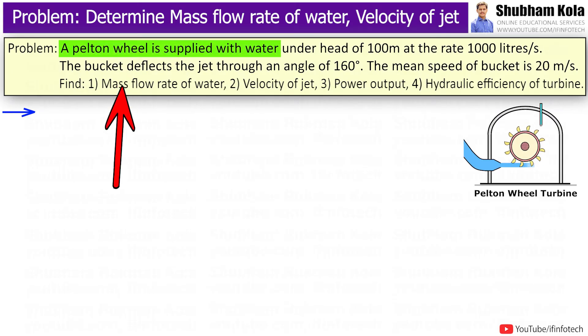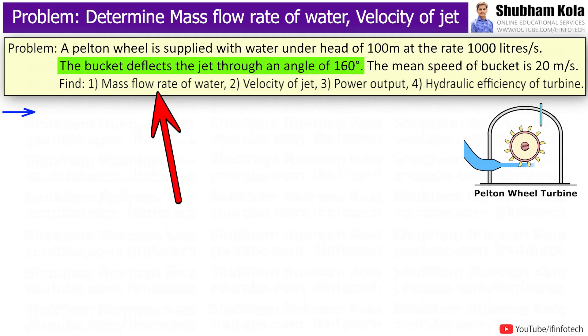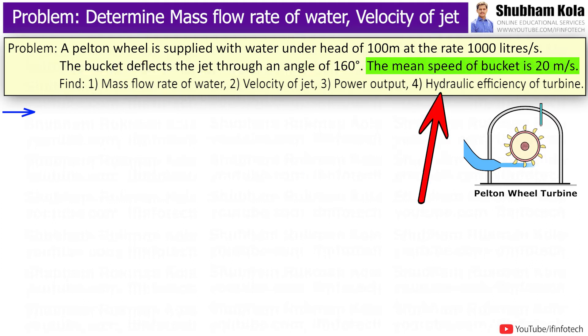Here's the statement: A pelton wheel is supplied with water under a head of 100m at the rate of 1000 liters per second. The bucket deflects the jet through an angle of 160 degrees. The mean speed of bucket is 20 m per second.